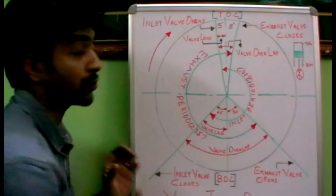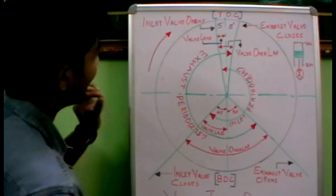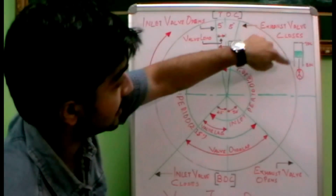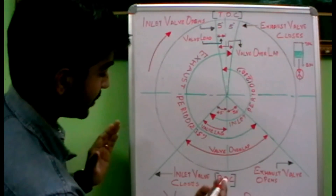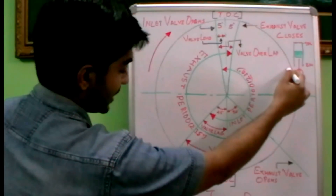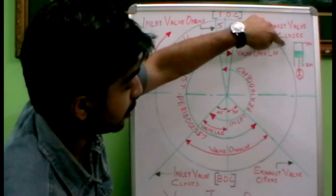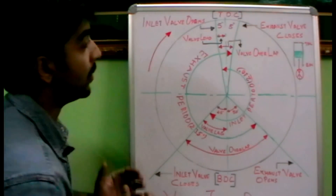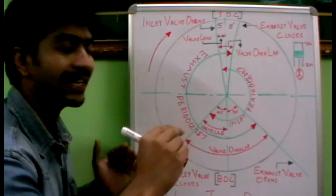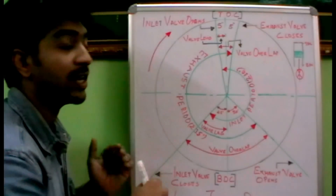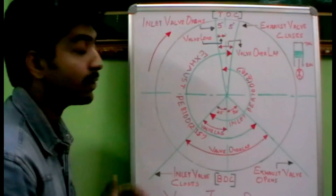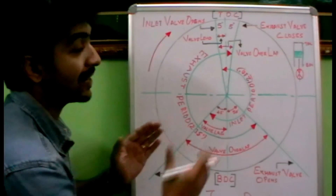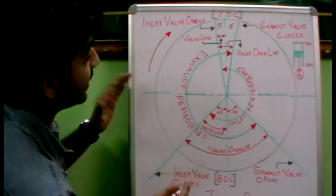Before going into this, you should know the theoretical concept. According to the theoretical concept, the inlet valve opens when the piston is at top dead center and closes when the piston is at bottom dead center. The exhaust valve opens when the piston is at bottom dead center and remains open until it reaches the top dead center where it must close. But practically it varies because the valves cannot instantaneously close or open due to the inertia of the piston movement, and also the air-fuel mixture has its own inertia. So this period varies from the theoretical concept.